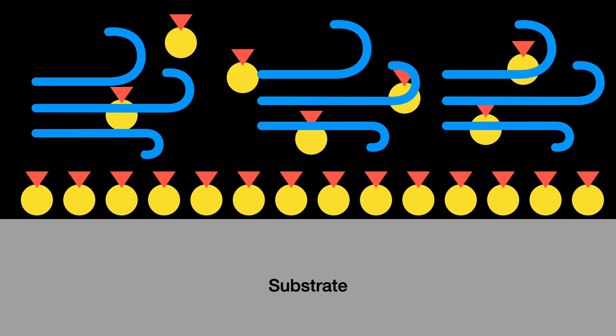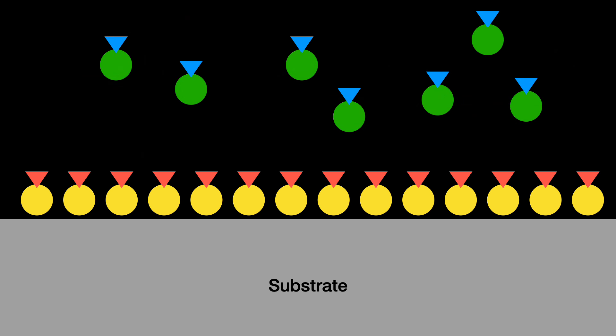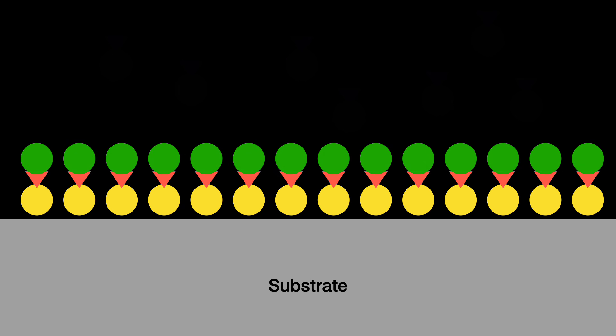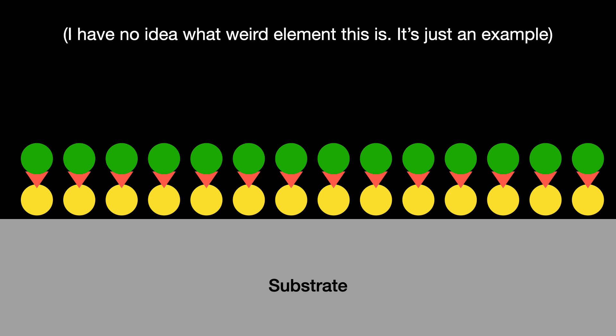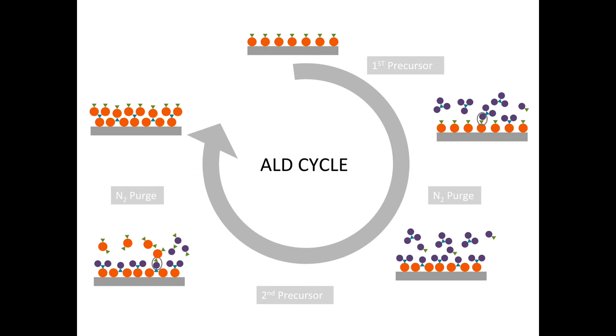This is our first pulse-purge cycle. Now we do a second round of pulse-purge actions but with a different chemical. This one will react with the first absorbed reactant to form just a portion of our deposited layer, usually a single atom thick. We repeatedly run this cycle until we achieve a layer of the appropriate thickness. This is all done in a very controlled environment — the temperature in particular is important: high enough to facilitate the absorption of the first reactant, but not high enough to cause uncontrolled reactions.